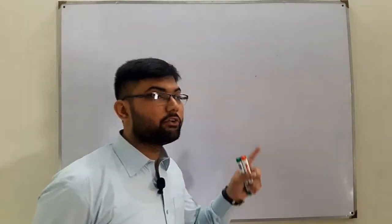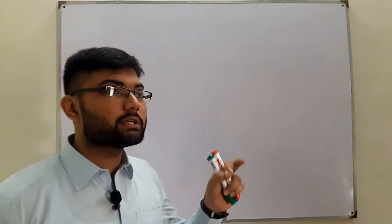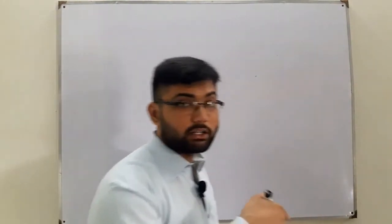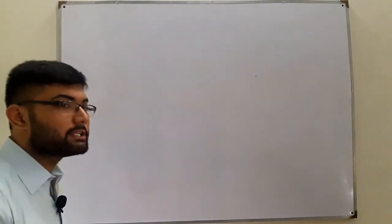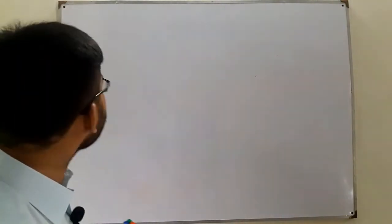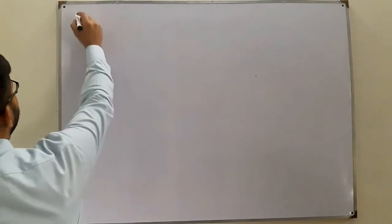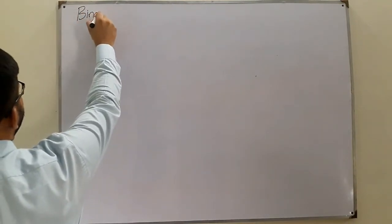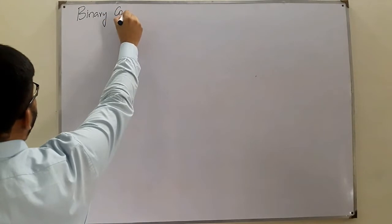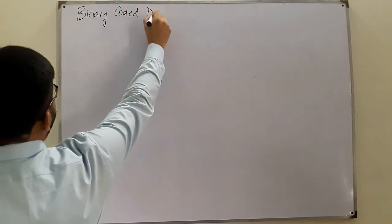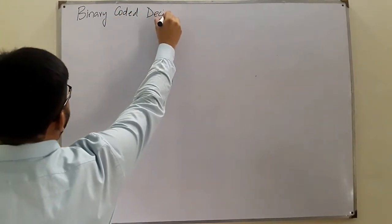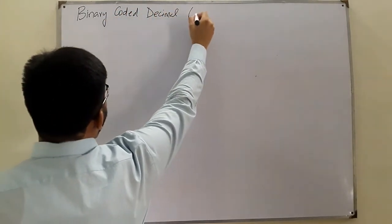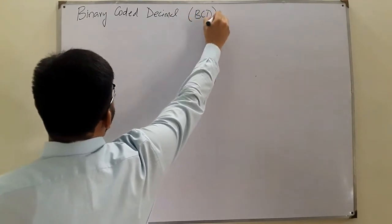The first part of this lecture was about introduction to codes. Now we start studying the codes. The first code we discuss is BCD, which stands for Binary Coded Decimal — in short, called BCD.